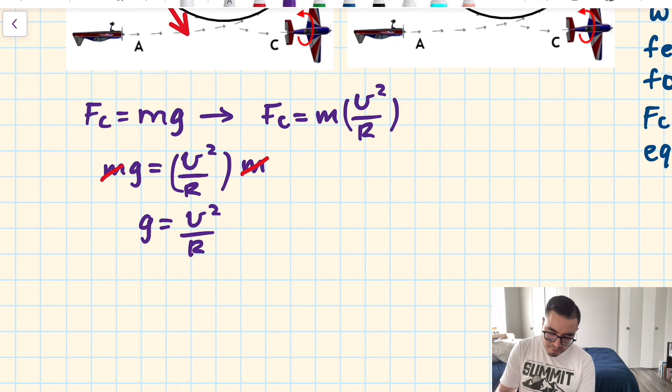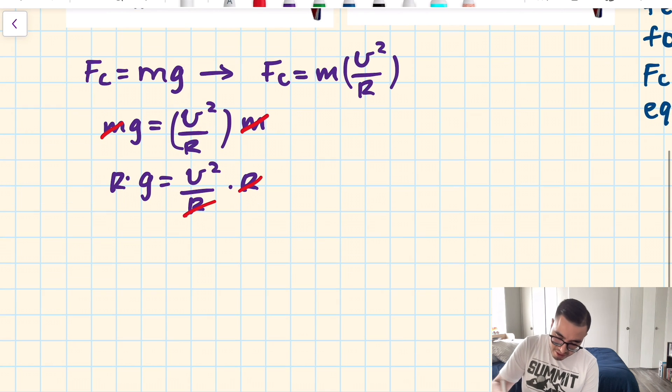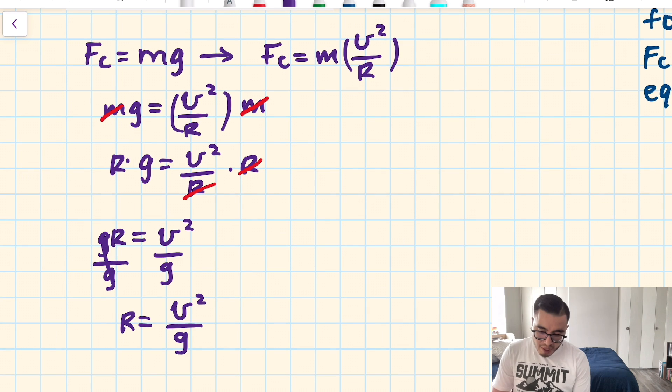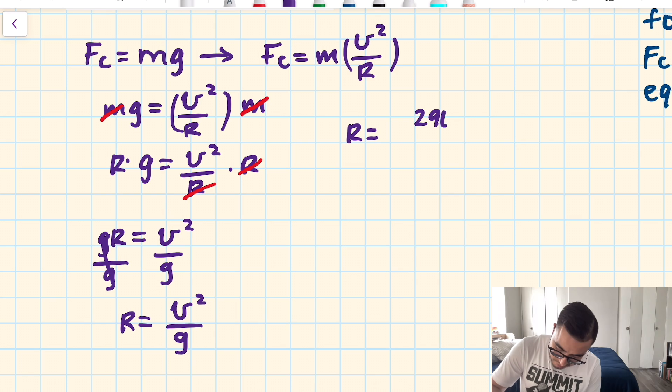We can cancel the mass. And solving for radius is simple. We multiply by radius to not have it as the denominator. And then we'll just divide by the acceleration of gravity. Now we just plug in our numbers. Don't forget to square the velocity.